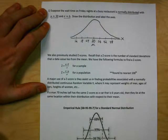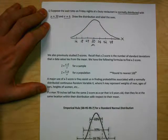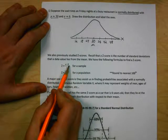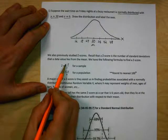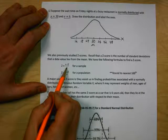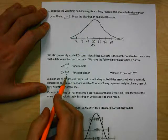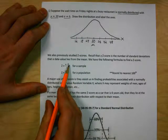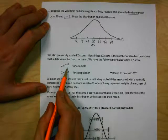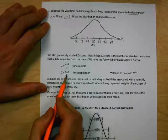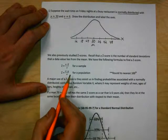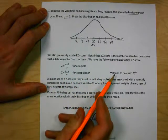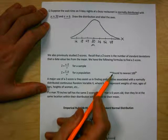We previously looked at z-scores. Recall that a z-score is the number of standard deviations that a data value lies from the mean. For a sample: z = (x − x̄) / s, where x is your data value, x̄ is the sample mean, and s is the sample standard deviation. For a population, it's the same concept: z = (x − μ) / σ, using the population mean mu and population standard deviation sigma. To find the number of standard deviations from the mean, take your data value, subtract the mean, and divide by the standard deviation. Later on we'll talk about why we round to the nearest hundredth — it has to do with charts that we use.